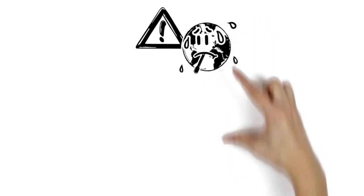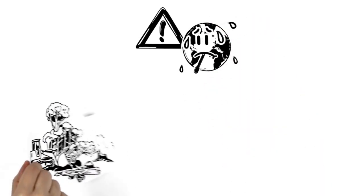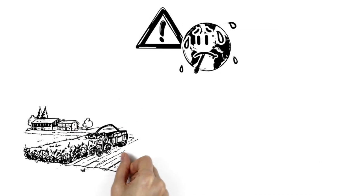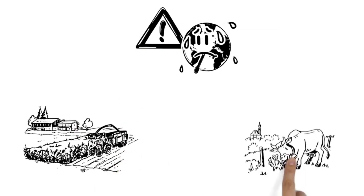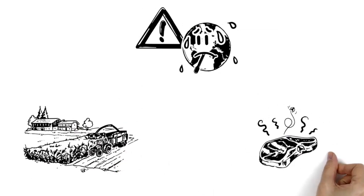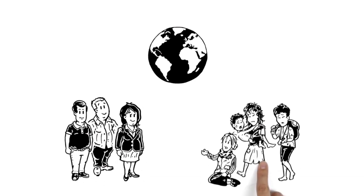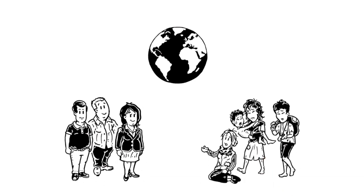Unfortunately, the consequences are grave. Wasted food is responsible for nearly a quarter of all environmental pollution. Rainforests are cut down in order to grow food that is wasted, and to clear pasture for farm animals whose meat ends up in the trash.